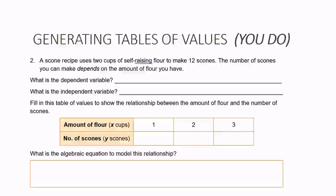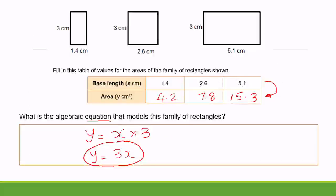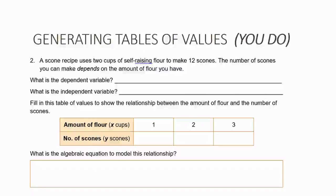Now it's your turn. A scone recipe uses 2 cups of self-raising flour to make 12 scones. The number of scones you make depends on the amount of flour you have — that's a big clue. I want you to identify the independent and dependent variables, fill in the table (showing cups of flour and how many scones they make), and then come up with the equation. Pause the video, write your answers in your notes or book, and I'll meet you with the answers when you're ready.